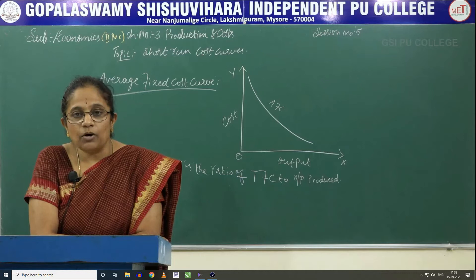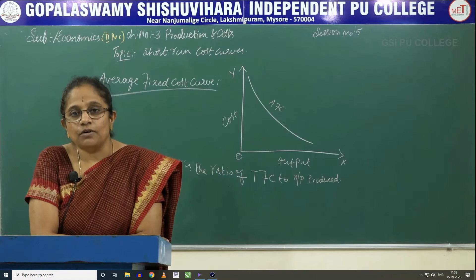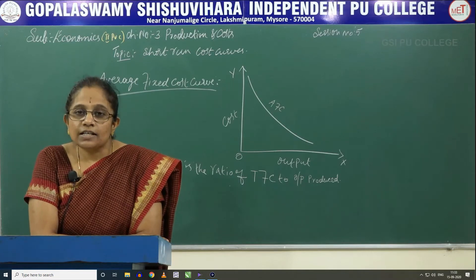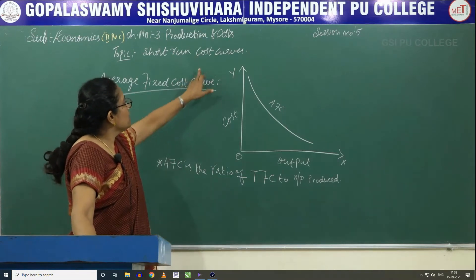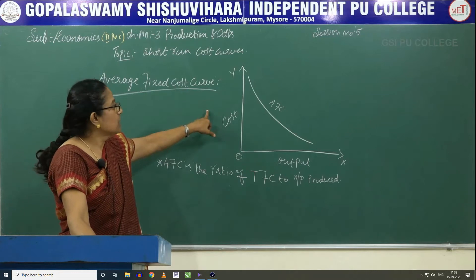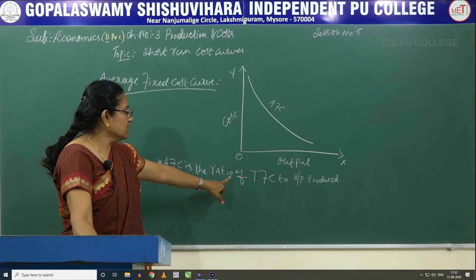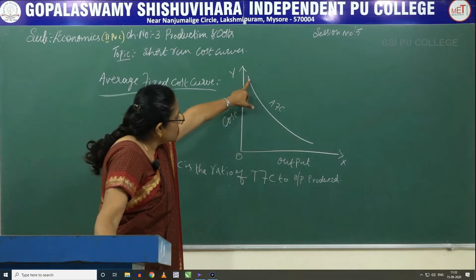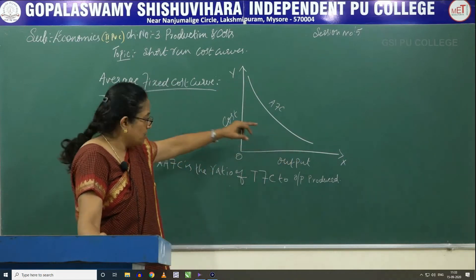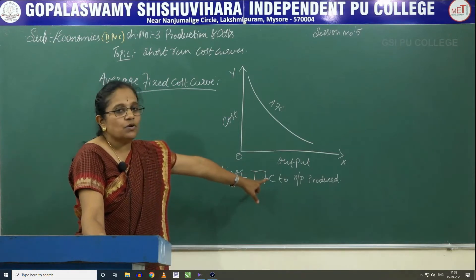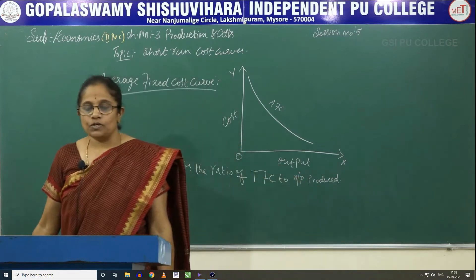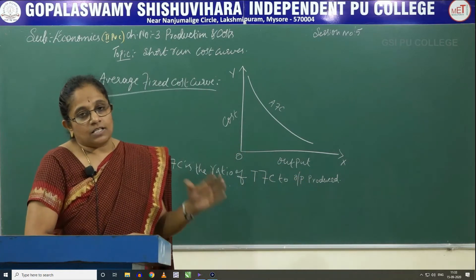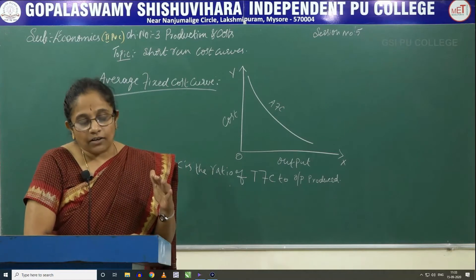We are going to learn about the different types of short-run cost curves and how they are formed and how they are going to intersect each other. The first one is the average fixed cost curve. The average fixed cost curve is the one which is in the rectangular hyperbola shape. Average fixed cost is the ratio of total fixed cost to the output produced, so the average fixed cost is in the shape of a rectangular hyperbola.